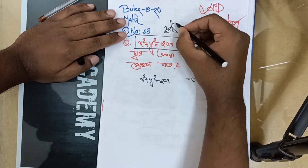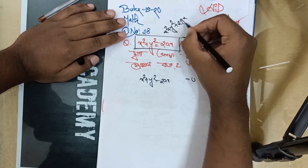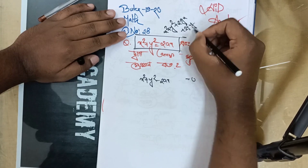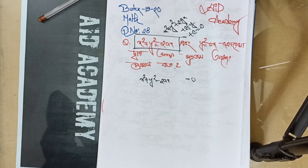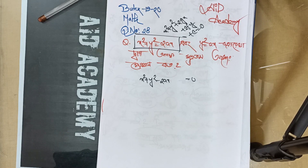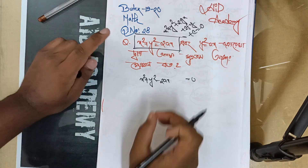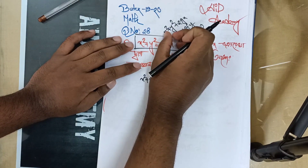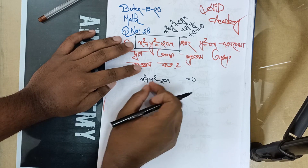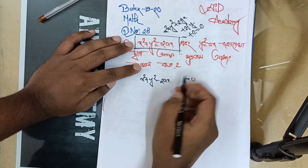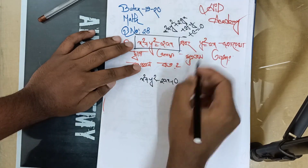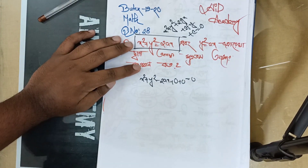The standard equation is x squared plus y squared plus 2gx plus 2fy plus c equals 0. So here we have x squared plus y squared, and 2gx equals 2ax, and 2fy equals 0, and c equals 0.